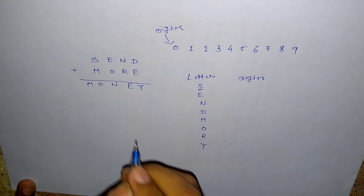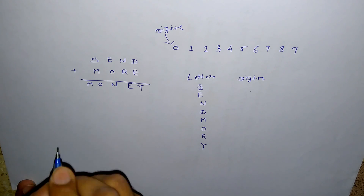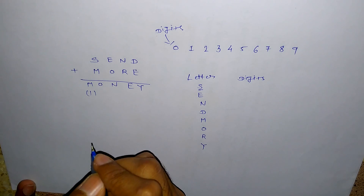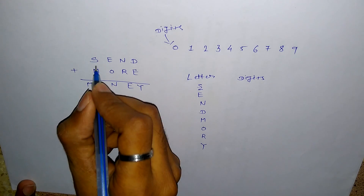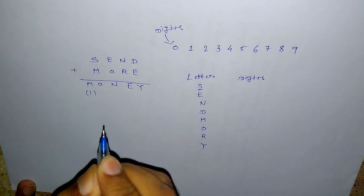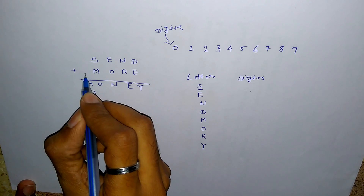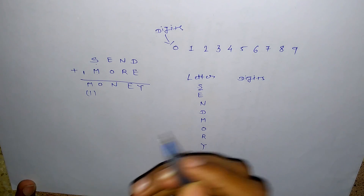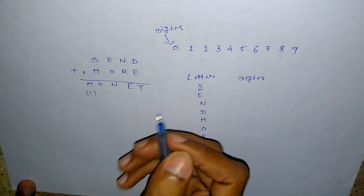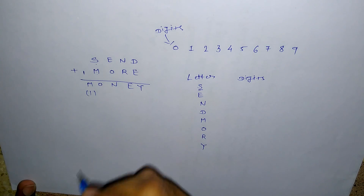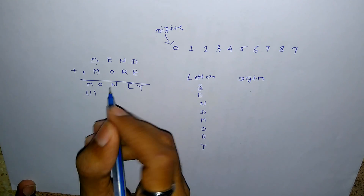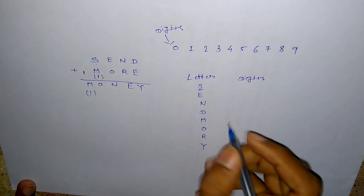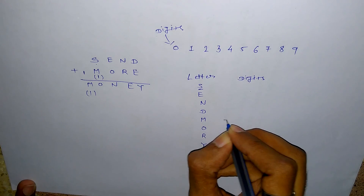First of all, we have the value of M. Value of M is 1 — but why 1? Because when we are adding something to M, we get a carry over here. So value of M is 1. Basically, this problem is solved using trial and error, so we have to try something and get the result.